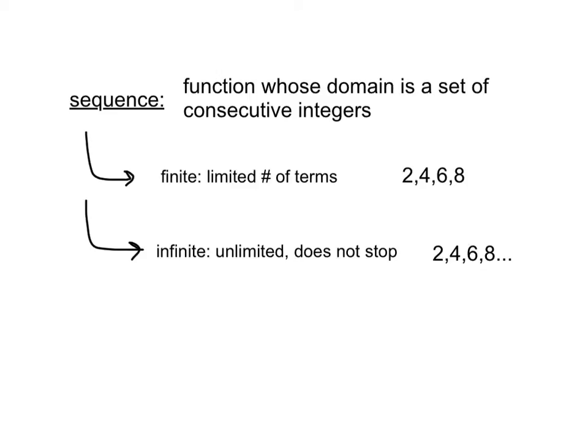A sequence is a function whose domain is a set of consecutive integers. Within that definition of sequence, we have finite sequences. Those have a limited number of terms, so 2, 4, 6, 8. We have four terms in this finite sequence.